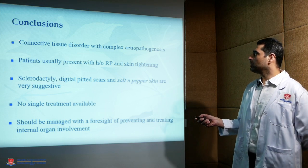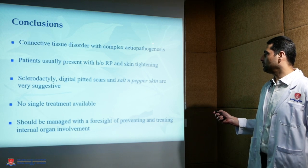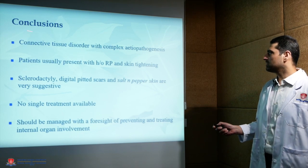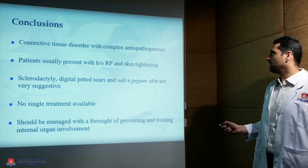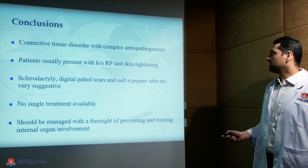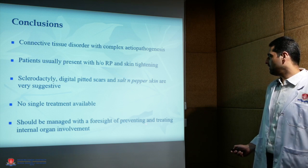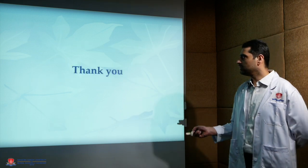In conclusion, systemic sclerosis is best described as a connective tissue disorder with complex etiopathogenesis. Patients usually present with history of Raynaud's phenomenon and skin tightening. Sclerodactyly, digital pitted scars, and salt and pepper skin are very suggestive. There is no single treatment available, and patients must be managed with the foresight of preventing and treating internal organ involvement. Thank you.